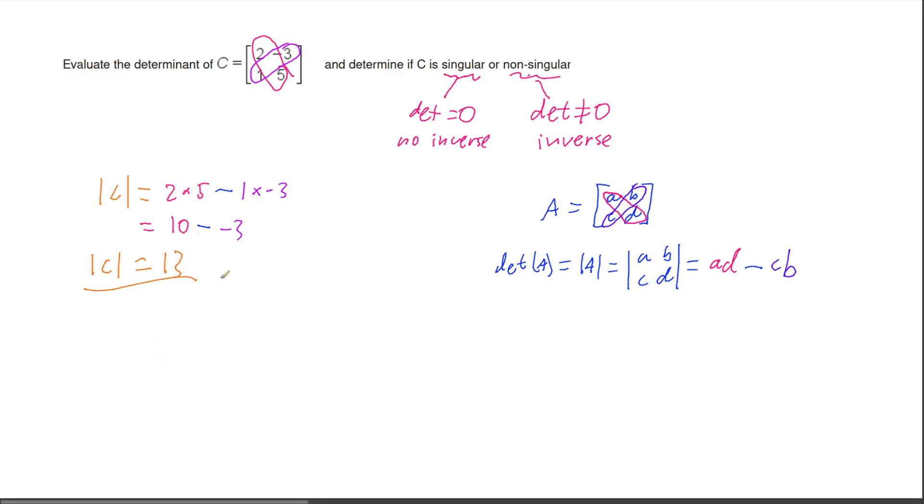So now we have the determinant, it's 13. So we can go up to our singular or non-singular test. Our determinant is not zero, so therefore C is non-singular, which means that we can inverse our matrix.